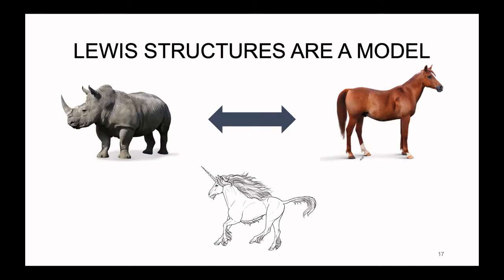Lewis structures are what we call a model. They are not completely perfect — there are plenty of exceptions to them. A really good way to explain this is with a molecule example, like the unicorn. Unicorns do not actually exist, but we can try to explain them by drawing attributes from other creatures that do exist. The most basic definition of a unicorn is a horse with a horn.